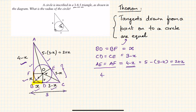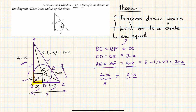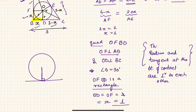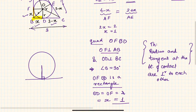Now from these two relationships, AF equals 4 minus x and AE equals 2 plus x. Since AF equals AE, we get 4 minus x equals 2 plus x, so 2x equals 2, and therefore x equals 1. That's one method of solving it.